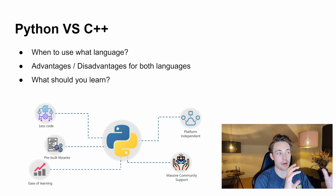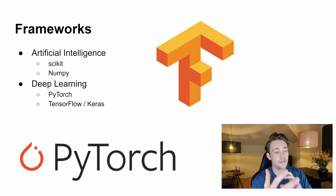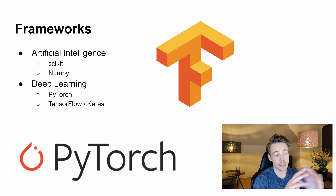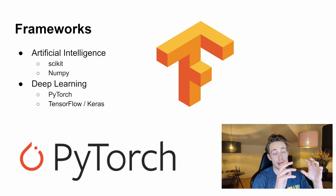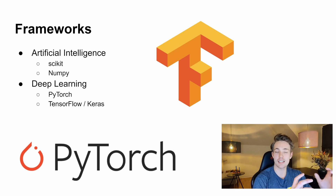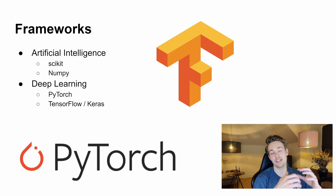It's really easy to convert back and forth between languages with the newest frameworks like PyTorch. All the frameworks are basically just wrappers around some C++ code. The most common Python frameworks are really well optimized, so calling their methods from Python gives the same performance as writing things directly in C++, because these are basically just wrappers for highly optimized C++ code.